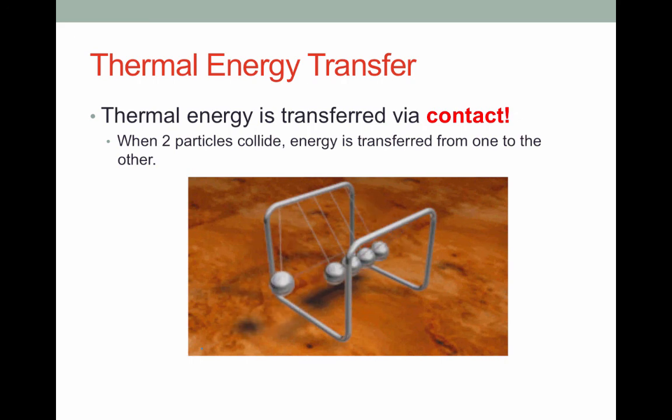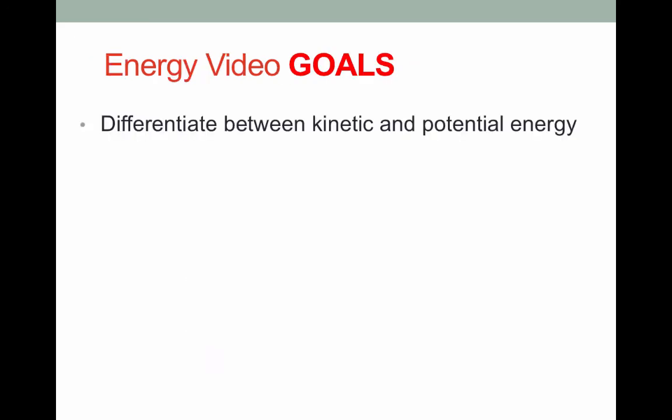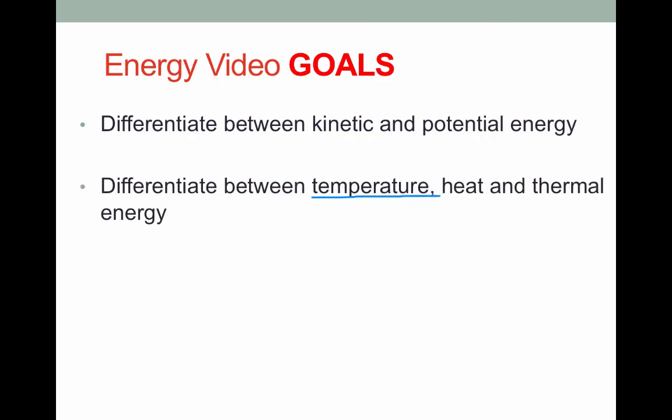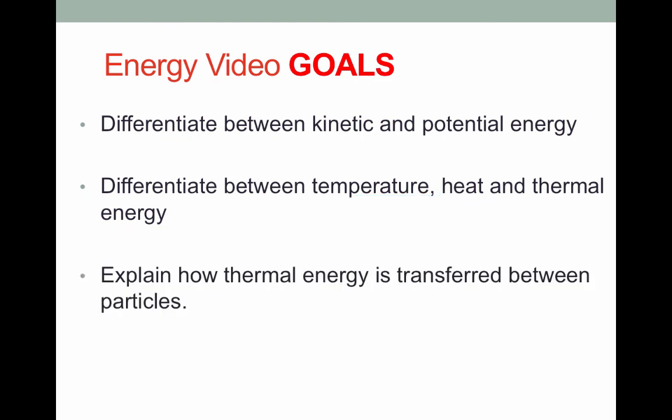That brings us to the end of our energy video. Let's quickly review our goals. First, we differentiated between kinetic and potential energy, defining kinetic energy as the energy of motion, and potential energy as the energy of position. Then, we differentiated between temperature, heat, and thermal energy. We said that temperature is the measure of average kinetic energy of a system, whereas heat is the process of the transfer of energy between a warmer object and a cooler object. And finally, we said that thermal energy was the energy contained in a system due to the motion of the particles. And finally, we explained how thermal energy is transferred between particles. When particles collide, they are able to transfer energy.